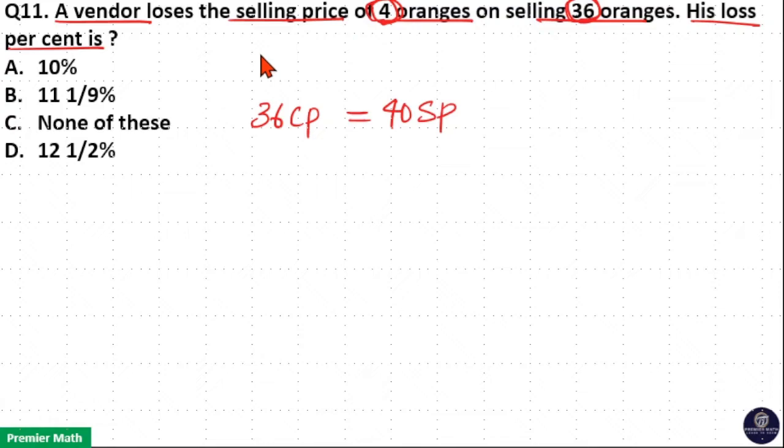Cost price of 36 oranges minus selling price of 36 oranges is the loss here. Loss here is equal to selling price of 4 oranges, that is 4SP. Which means total cost price is 4SP plus 36SP, which is 40SP. That is selling price of 40 oranges.